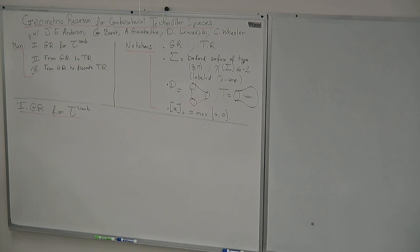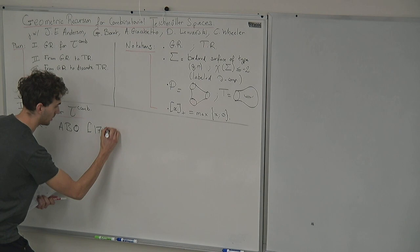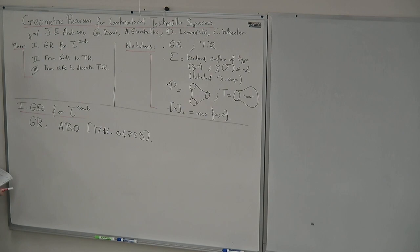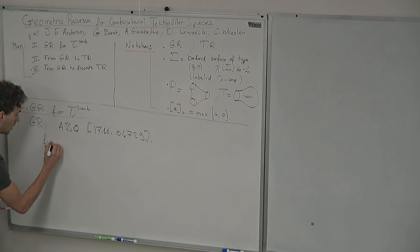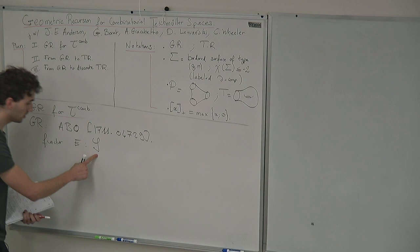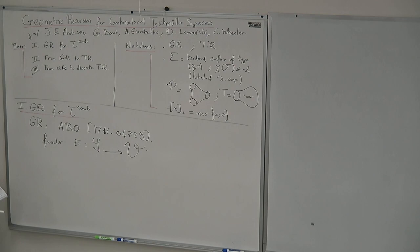In the GR paper of Andersen and Borot — arXiv reference 04729 — the authors present the principle of geometric recursion. The aim is to construct a functor, using Jorgen's notations, from the category of bordered surfaces S to a category of topological vector spaces V, and to construct functorial assignments recursively.